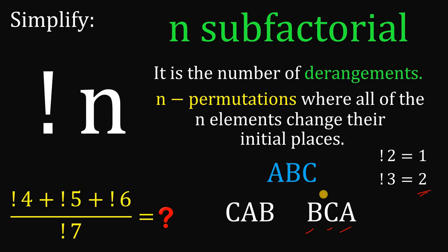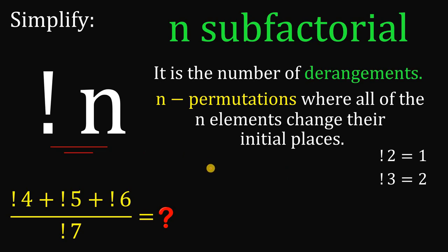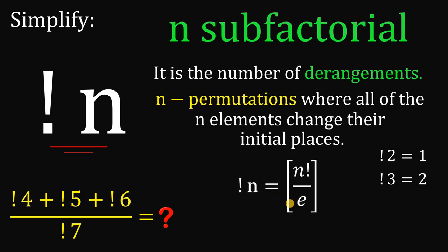Surprisingly, there is a formula to find the value of n sub-factorial: n sub-factorial equals the greatest integer value of n factorial over e. Here, n factorial is the usual factorial — the product of all natural numbers less than or equal to n — and e is Euler's constant, approximately 2.718.